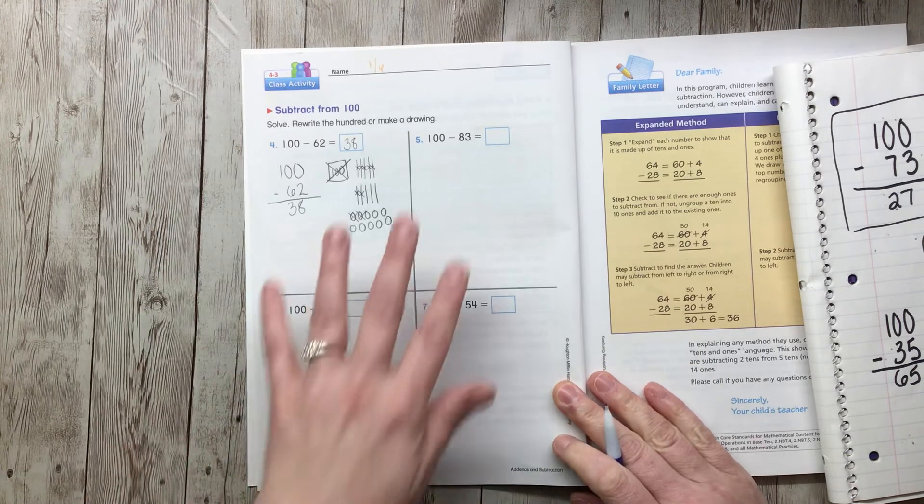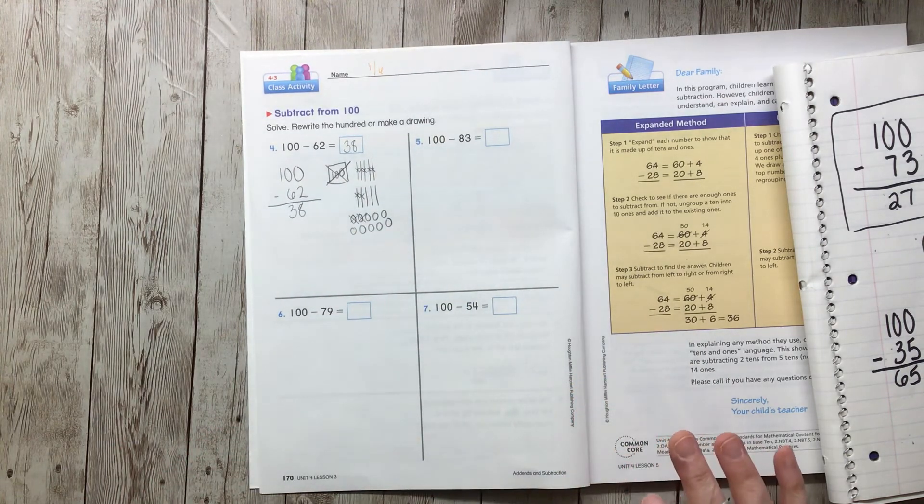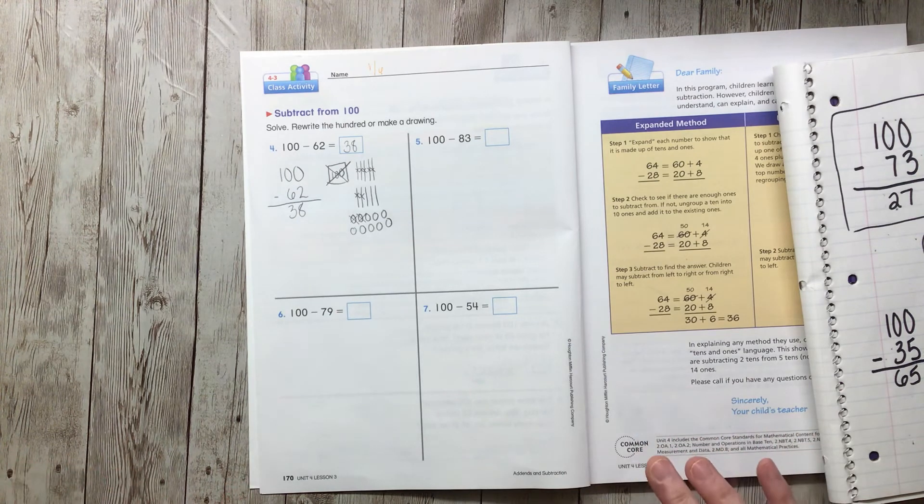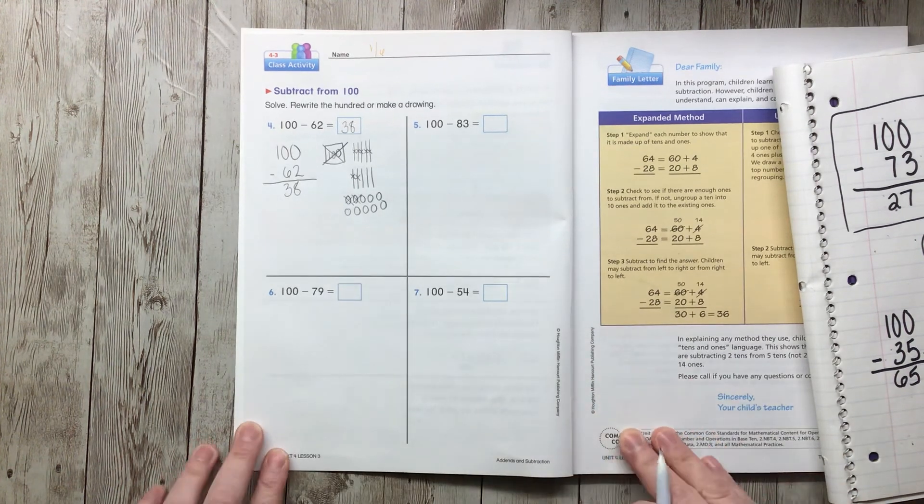All right, friends, your job is to do 5, 6, and 7 on your own. Take a photograph of it and turn it in to me on Seesaw when you're finished. I know you can do this.